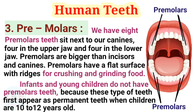Third, premolars. We have 8 premolar teeth that sit next to our canines — 4 in the upper jaw and 4 in the lower jaw. Premolars are bigger than incisors and canines. They have a flat surface with ridges for crushing and grinding food. Infants and young children do not have premolar teeth, as they first appear as permanent teeth when children are 10 to 12 years old.